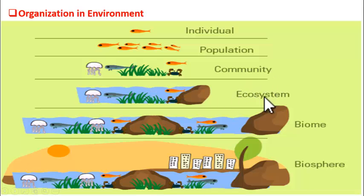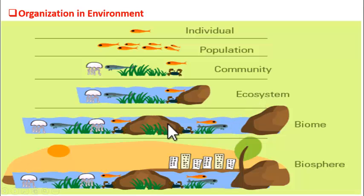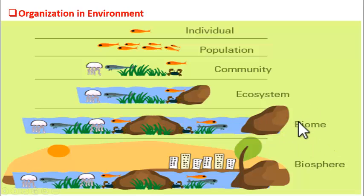Several ecosystems living in one particular area make up a biome. So, different types of ecosystems — aquatic ecosystem, terrestrial ecosystem, forest ecosystem — under similar climatic conditions make up a biome. Several biomes make up the biosphere. This biosphere is nothing but Earth.